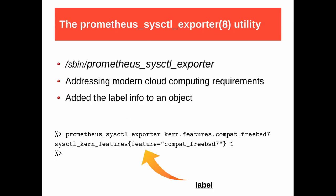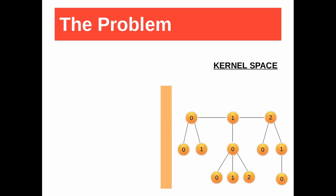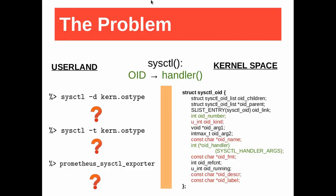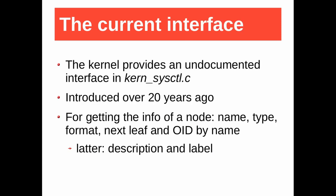sysctl is not the only tool to explore the MIB. There is a file utility that can print the label of an object. Now, the MIB is in the kernel — how can the sysctl utility print the MIB in userland? The input of the system call is an object ID, but the input of the utility is a name. The system call finds an object by its ID and calls its handler, so the description, type, and label remain inside the kernel. The kernel provides an undocumented interface for getting the info of a node: name, type, format, next leaf, the OID by name, description, and label.